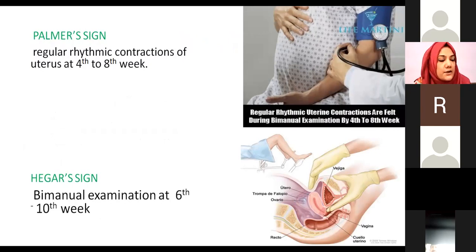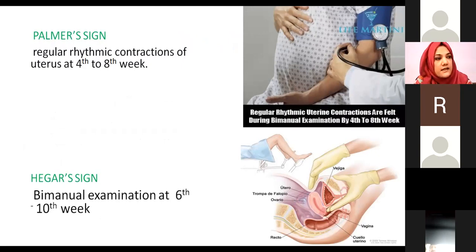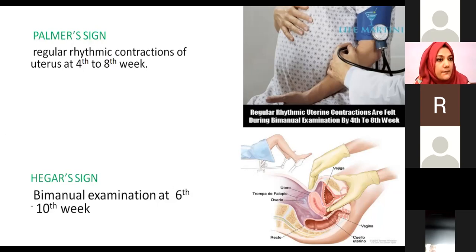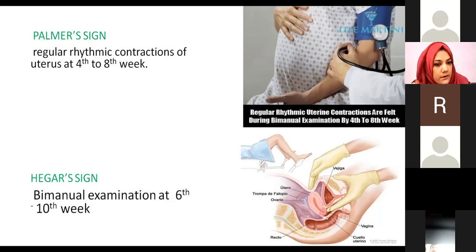There is also regular rhythmic contraction of the uterus detectable on examination. Both palms are placed on either side of the uterus on the abdomen. Contractions can be felt by an experienced examiner. Regular contractions are appreciable from 4 to 8 weeks of pregnancy.